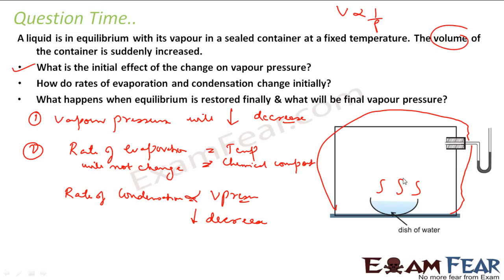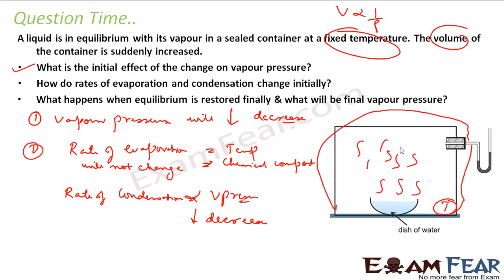The rate of evaporation — whatever evaporates — depends on the temperature and the chemical compound of the material, for example water here. The temperature is fixed, so the rate of evaporation will not change. But condensation depends on the vapor pressure. So initially, since the vapor pressure has decreased, there is less condensation. More and more vapor will evaporate, the vapor pressure will go up, and then condensation will start again. So the rate of condensation will also decrease initially.